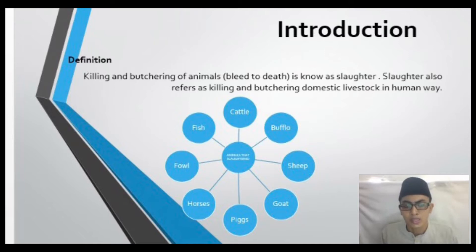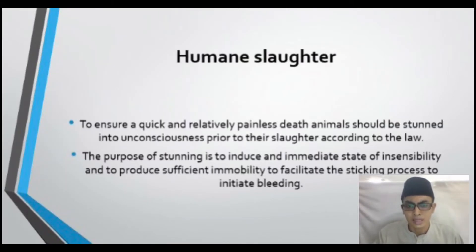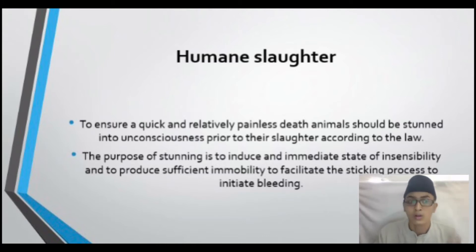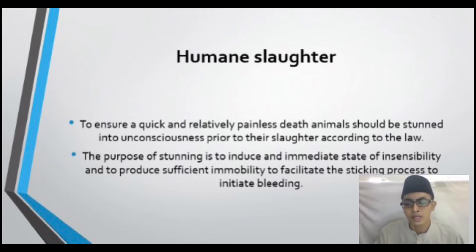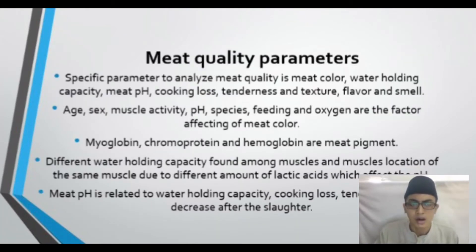Fowls, which include chickens, ducks, and quails, and also fishes. To ensure a quick and relatively painless death, the animal should be stunned into an unconscious state prior to slaughtering according to the law. The purpose of stunning is to induce an immediate state of insensibility and to produce sufficient immobility to facilitate the sticking process and initiate bleeding. These are the parameters of meat quality.